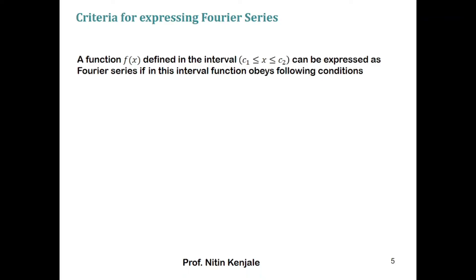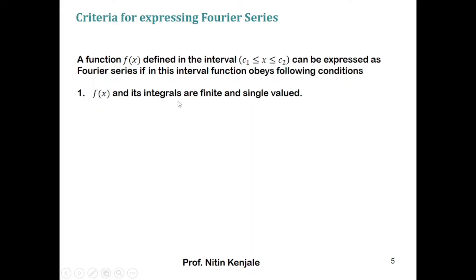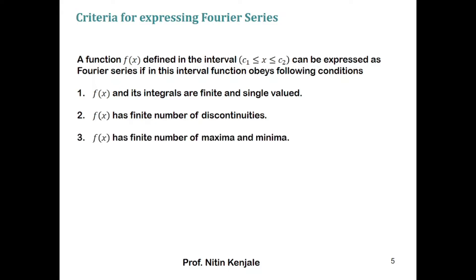Now let us see the criteria for expressing the Fourier series of a function. Let f(x) be a function in the interval c₁ to c₂ that can be expressed as a Fourier series if in this interval the function obeys the following conditions: (1) f(x) and its integral are finite and single-valued, (2) f(x) has a finite number of discontinuities, and (3) f(x) has a finite number of maxima and minima. These conditions are also called Dirichlet's conditions.